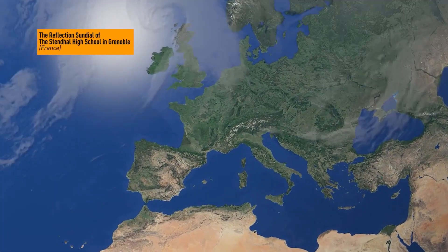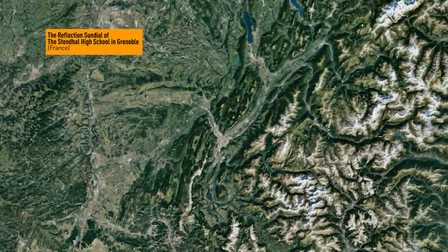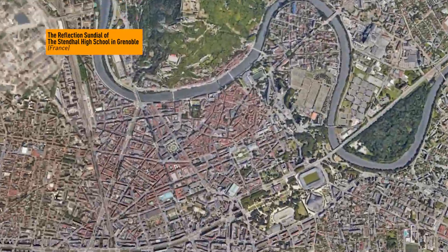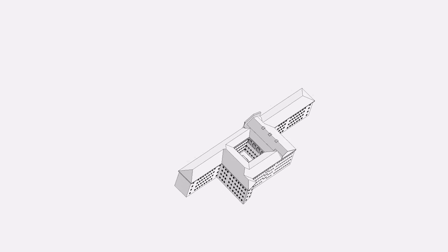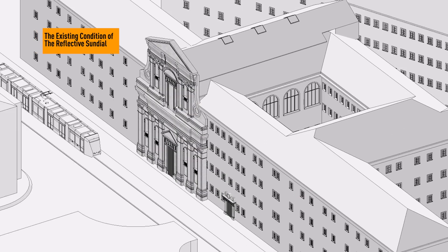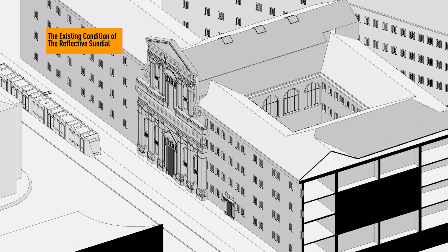This thesis is an introduction of representation on reflective sundials in the 17th century. The Lycée Stendhal, located in the southern French city of Grenoble, is a prominent secondary school with a long history of over two centuries.